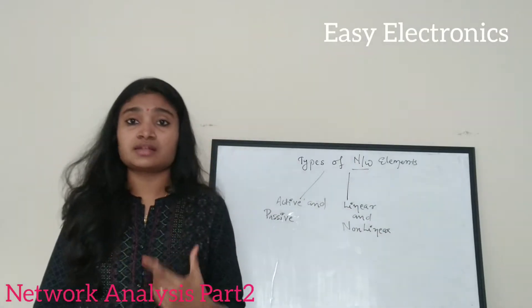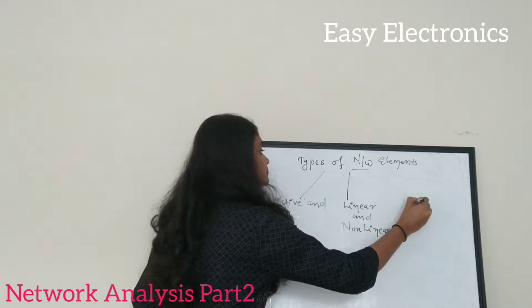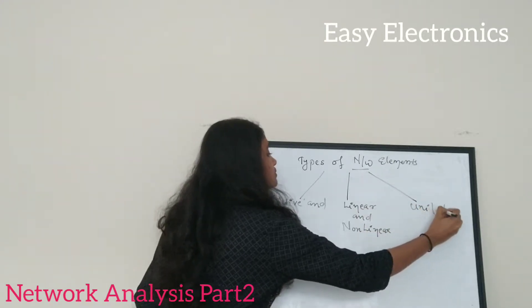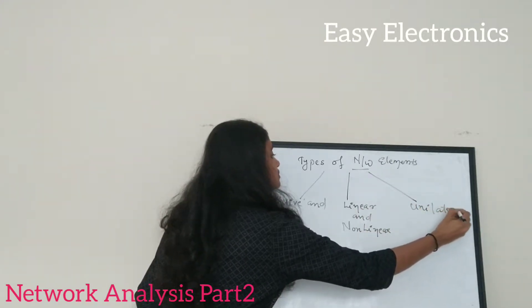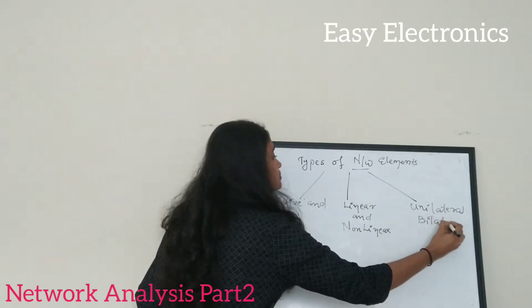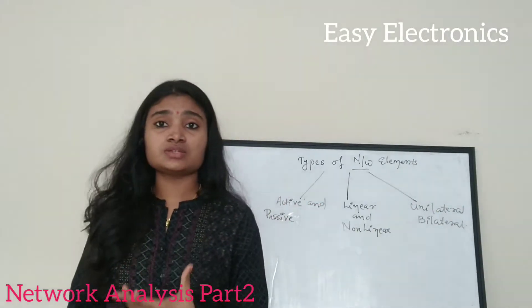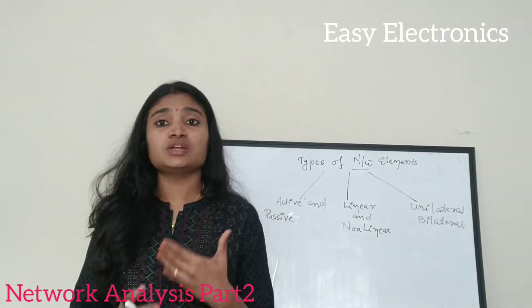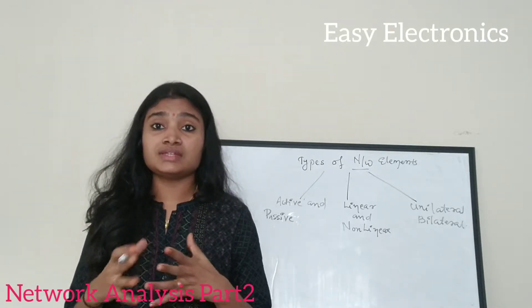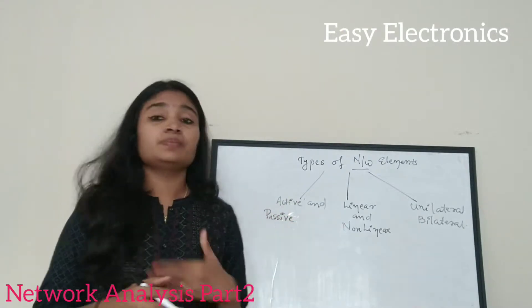The third category is unilateral and bilateral elements. These are the three categories of elements present in an electrical network, and we will now discuss what each of these three categories represents.